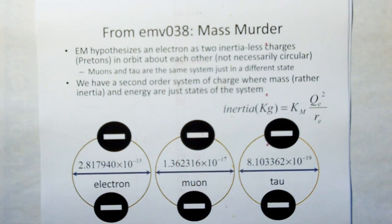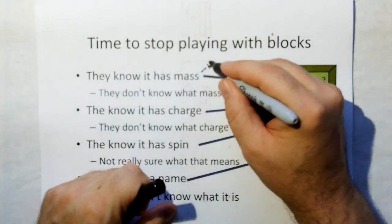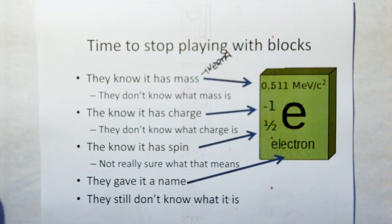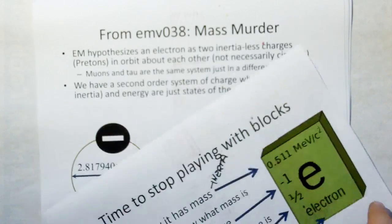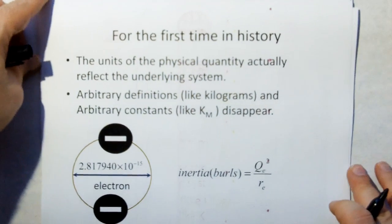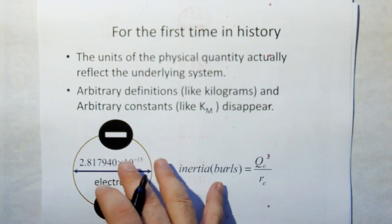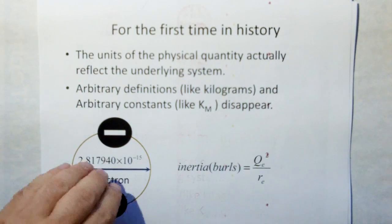Scientists have to stop playing with blocks. They know an object has mass, which is really inertia, but they don't know what mass is. They know it has charge but don't know what charge is. Just scalar quantities that float around in equations. They know it has spin, they're not really sure what spin is. They gave it a name, that doesn't mean they know anything. For the first time in history, the units of the physical quantities actually reflect the underlying system. Arbitrary definitions like kilogram and arbitrary constants like km disappear. Instead of mass, a system now has inertia in units of Burrells, square coulomb per meter.